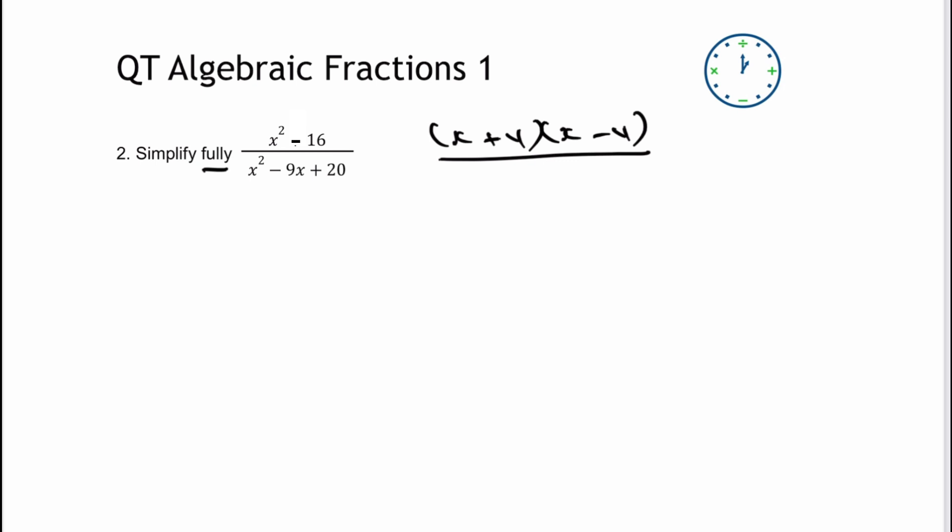So for the denominator I've got positive 20 and I'm looking for two numbers that when I multiply them together make positive 20 and when I add them together make minus 9. Well those two numbers are going to be minus 4 multiplied by minus 5 because two negatives when I multiply them together will give me a positive. So I can write my denominator as x minus 4 multiplied by x minus 5.